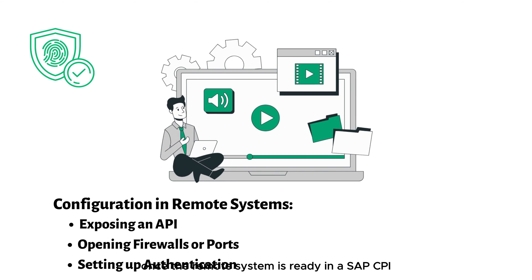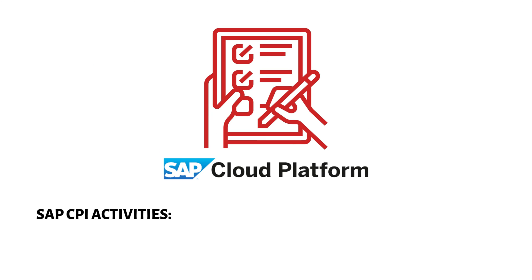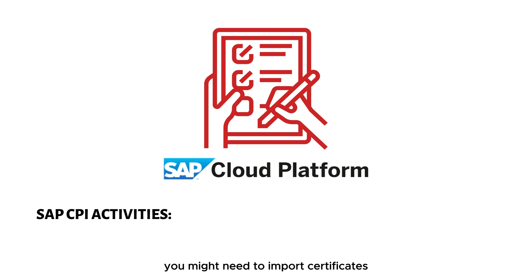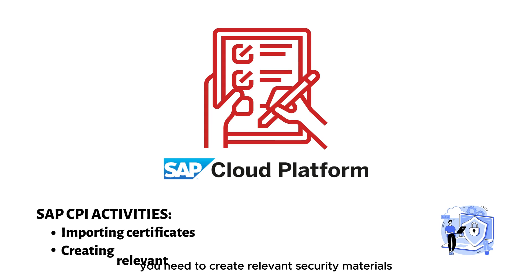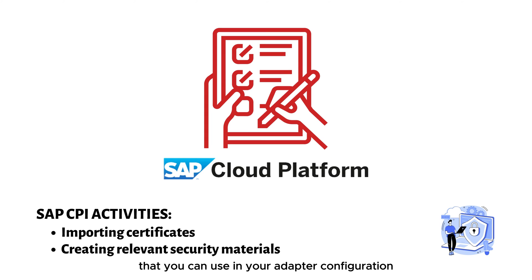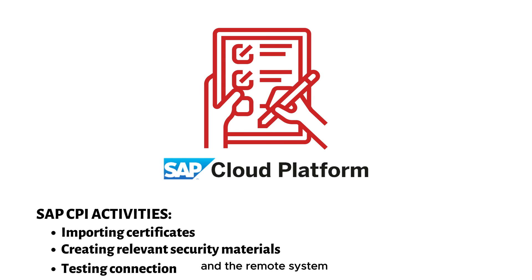Once the remote system is ready, in SAP CPI, you typically follow these activities. You might need to import certificates for secure communication. You need to create relevant security materials that you can use in your adapter configuration. You need to test the connection between SAP CPI and the remote system.